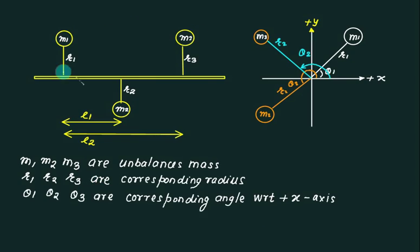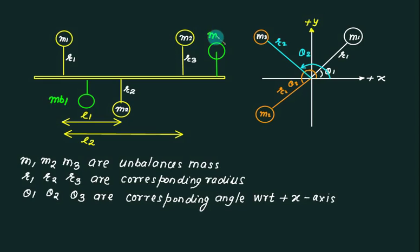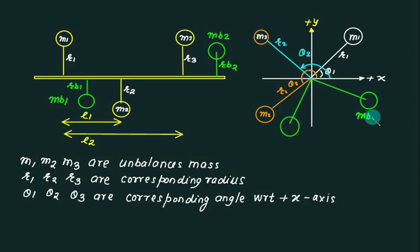To balance all these masses, I require only two balancing masses. Let me show my first balancing mass somewhere here and the other balancing mass attached here. I don't know their masses yet, so let's call them mb1 and mb2. This one is at radius rb2 and this one is at radius rb1. In my figure I will show both masses in this quadrant — this one is mb1 and this one is mb2, with corresponding radii rb1 and rb2.